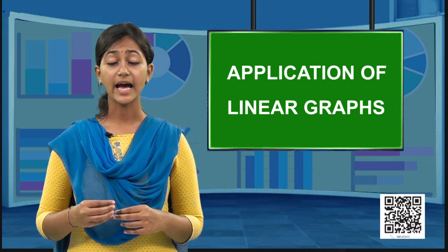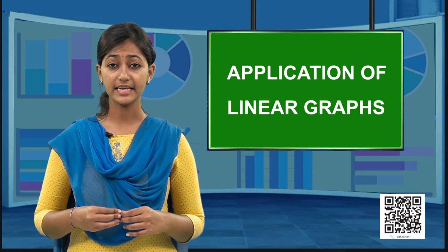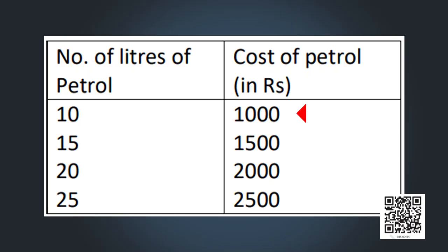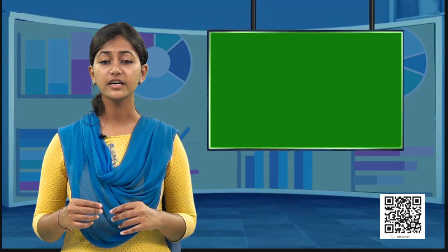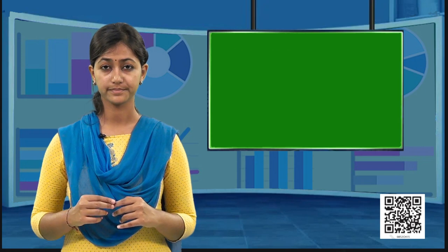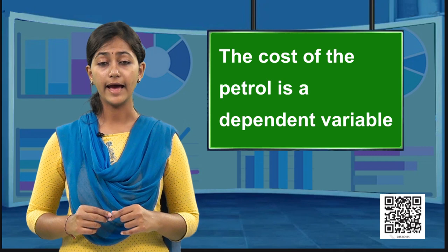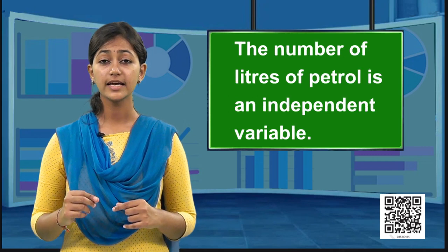Now let's see applications of linear graphs. Suppose 1 litre of petrol costs 100 rupees. For different quantities: 10 litres costs 1000 rupees, 15 litres costs 1500 rupees, 20 litres costs 2000 rupees, and 25 litres costs 2500 rupees. We can observe that the cost of petrol depends on the number of litres bought.